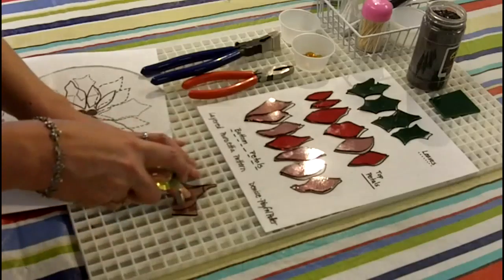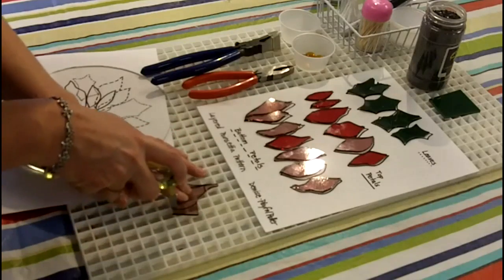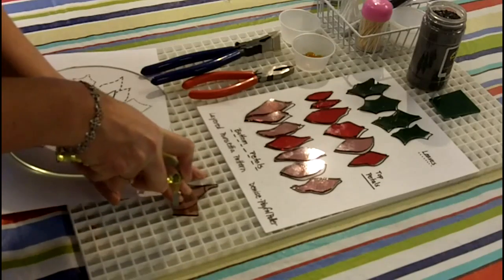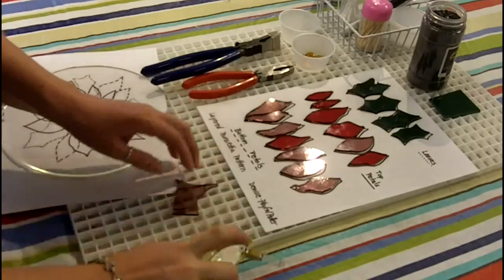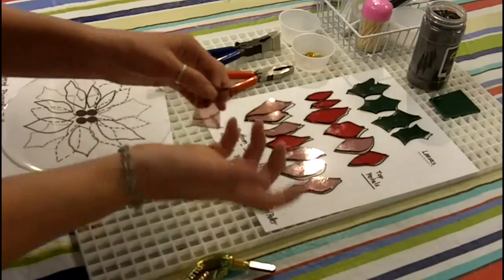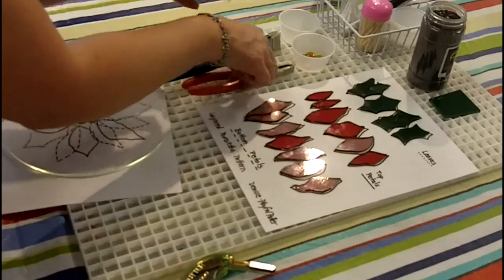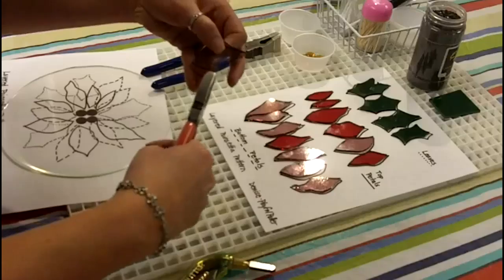So when you're cutting, I'm right-handed, so I like to push away from me. I'm going to start at one end, a nice slow even pressure all the way to the end of my score. Because this piece of glass already had this nice organic curve to it, I just made my petal fit into that little shape there.